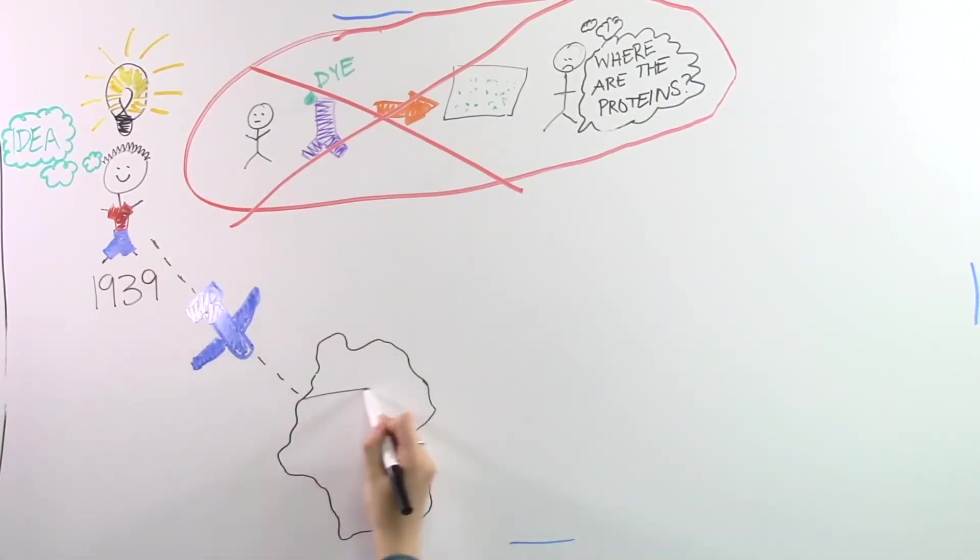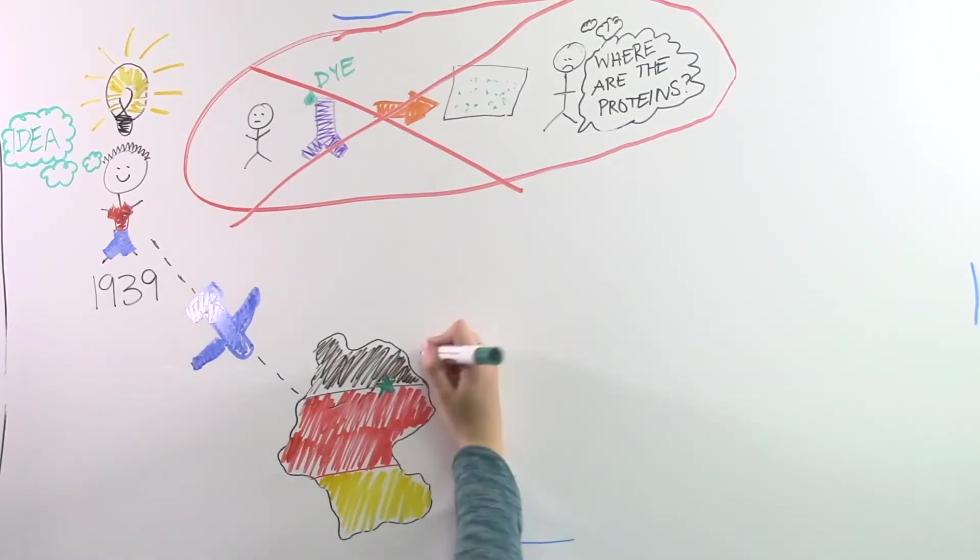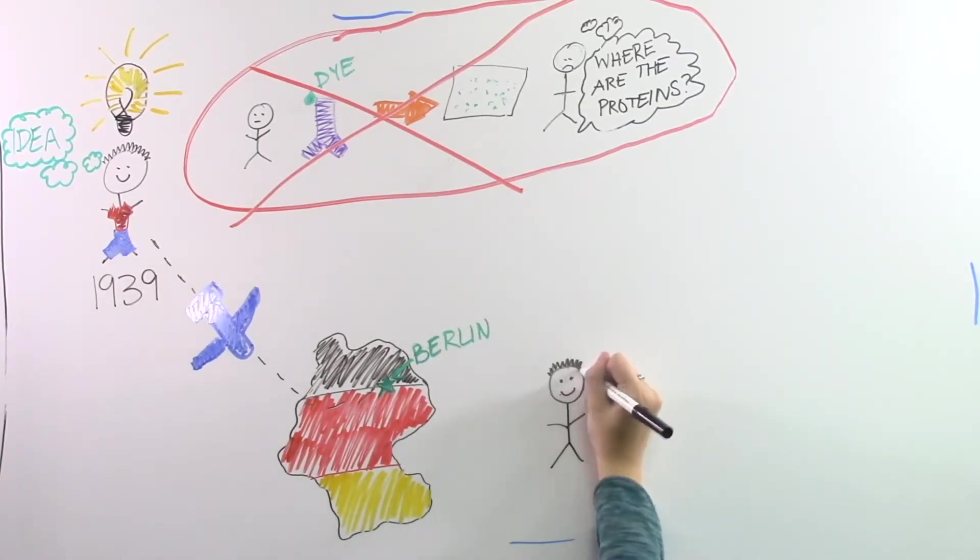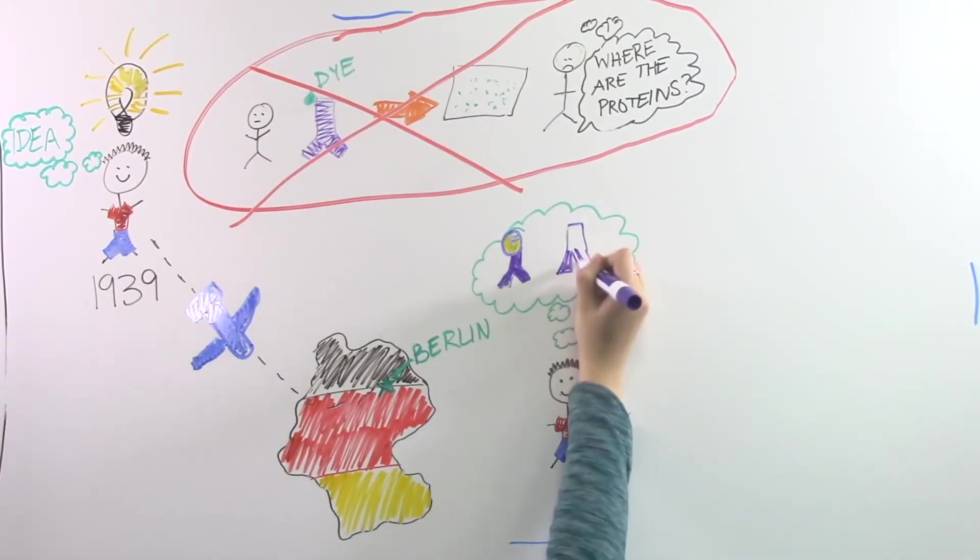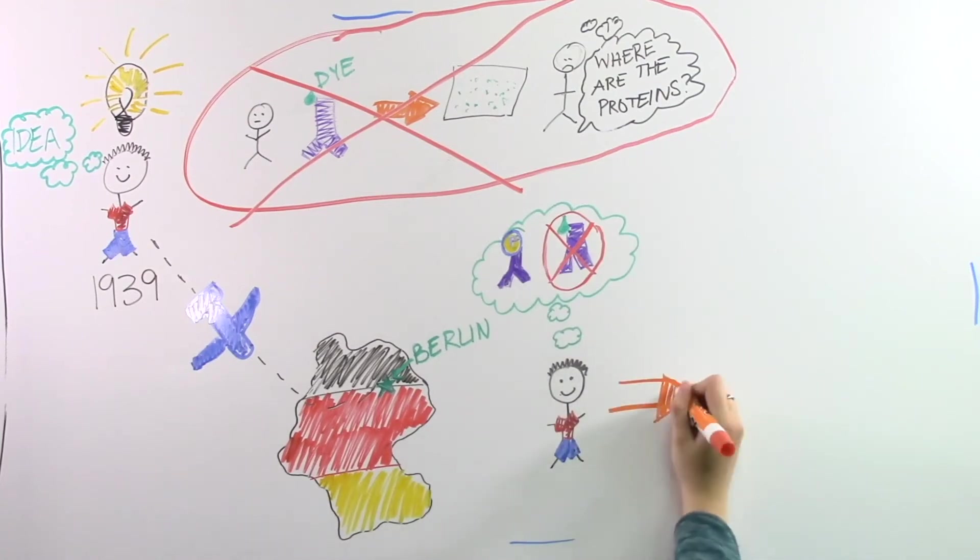While on a vacation in Berlin, Germany, Dr. Koons was thinking of ways to locate and identify the antibodies. And he came up with the idea to use a fluorescent molecule instead of a dye, which allowed the targeted proteins to be seen easier under a microscope because they were now brightly fluorescent.